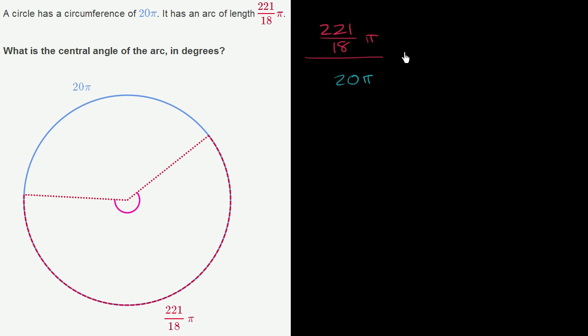is going to be equal to the ratio of this central angle, which we can call theta, the ratio of theta to 360 degrees if we were to go all the way around the circle, to 360 degrees.